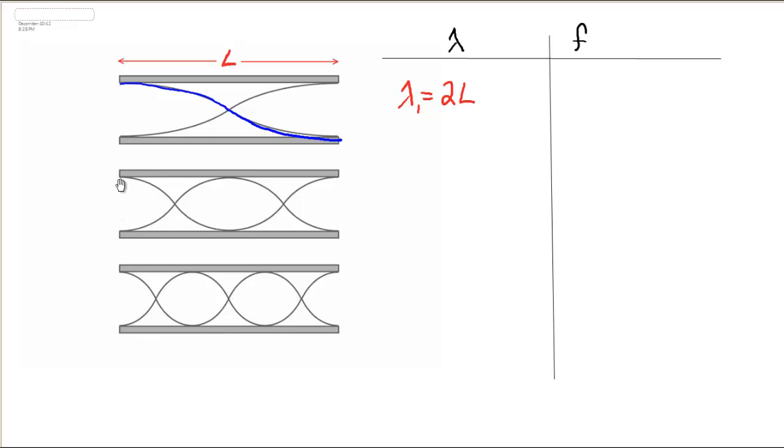We see that if we follow one wave completely through, it starts at a crest, goes down to a trough in the middle, and ends at a crest. So we actually have one full wave contained in that length.